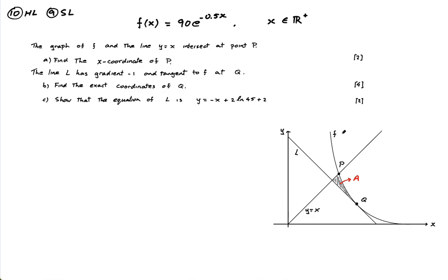So we have a graph of f, that's this line here. We have a line y equals x. This is here. And they say they intersect at this point P here.